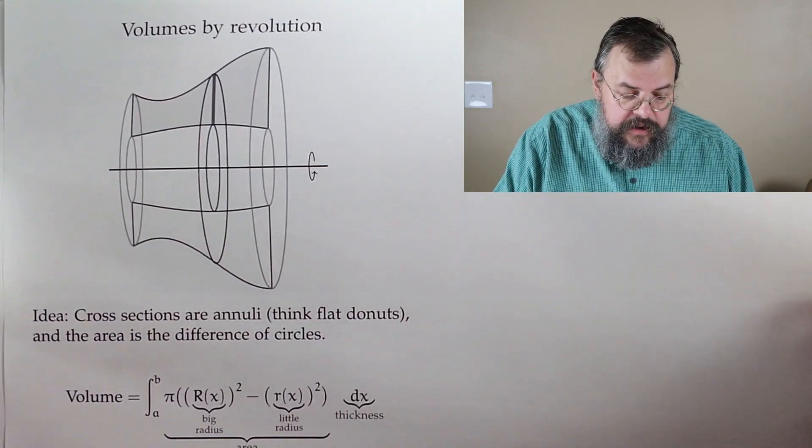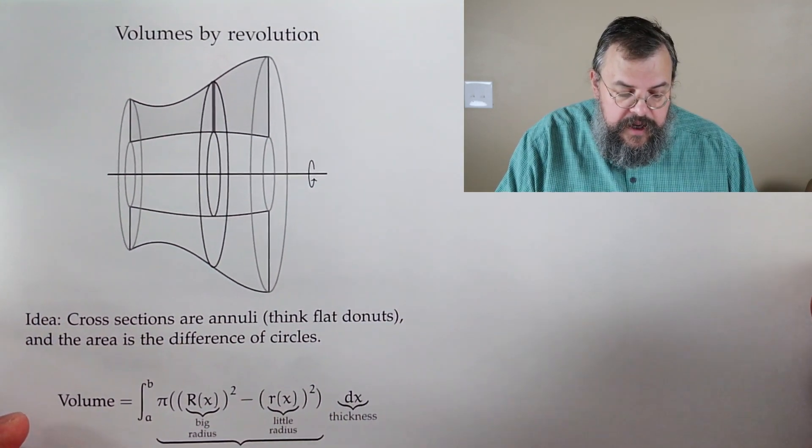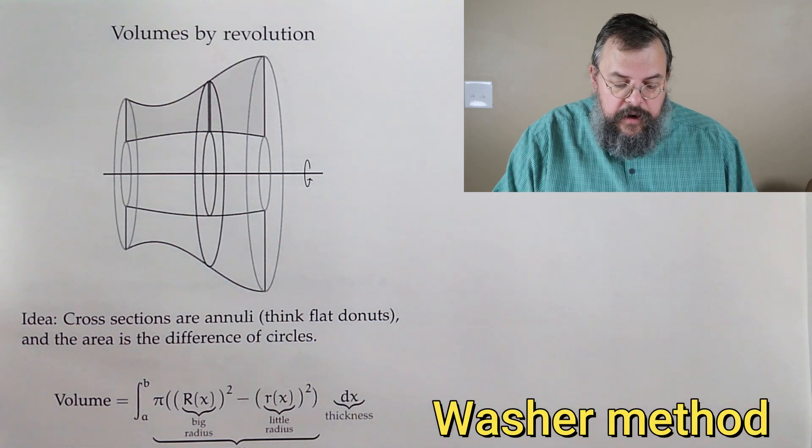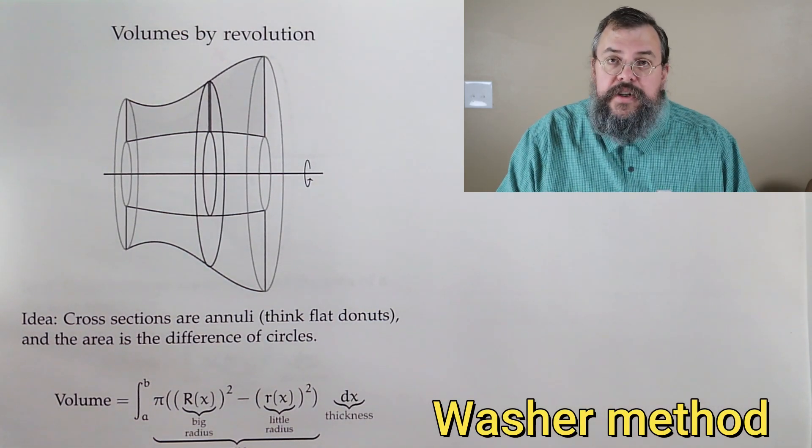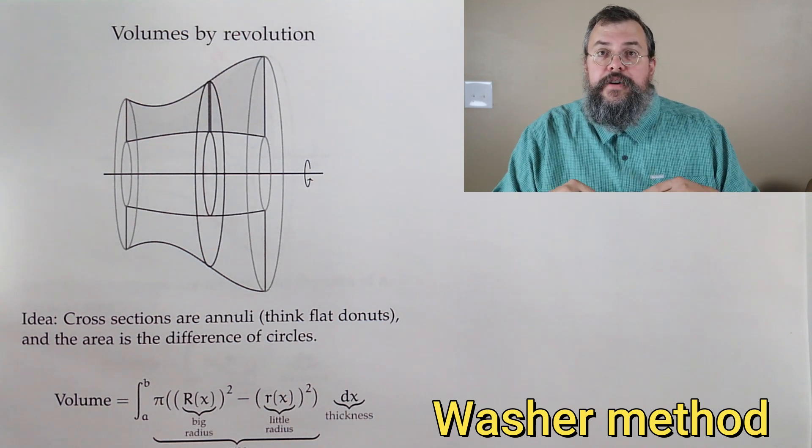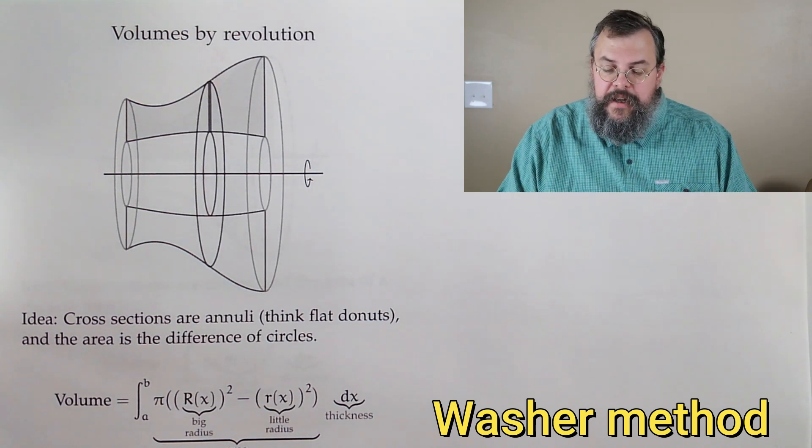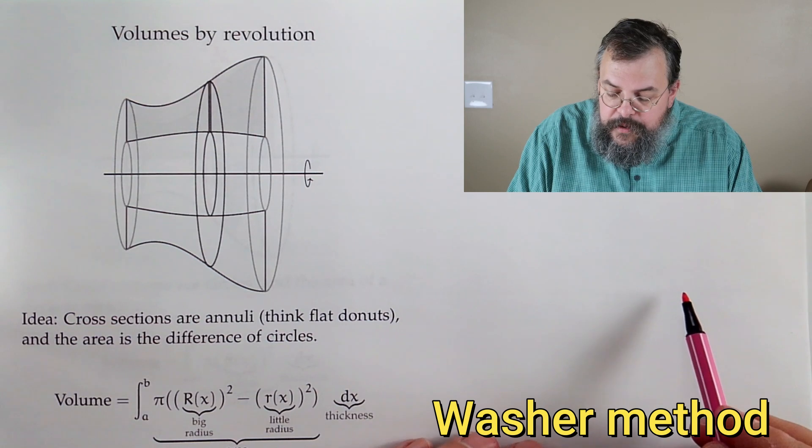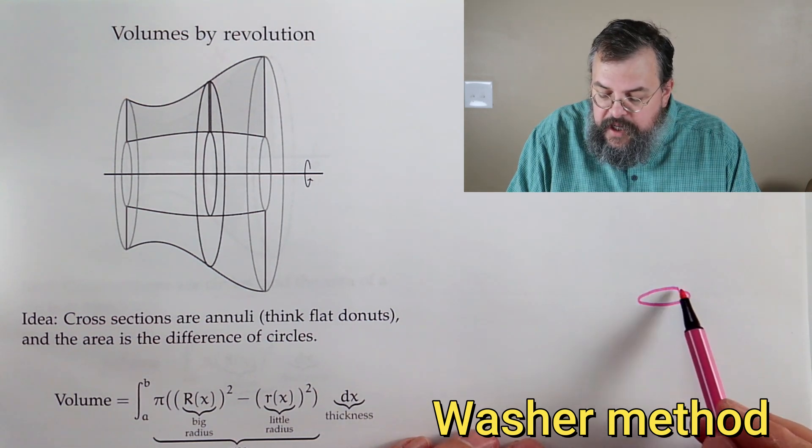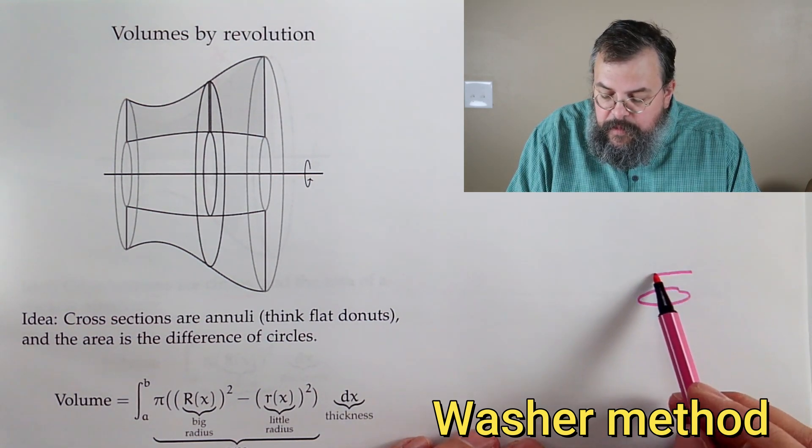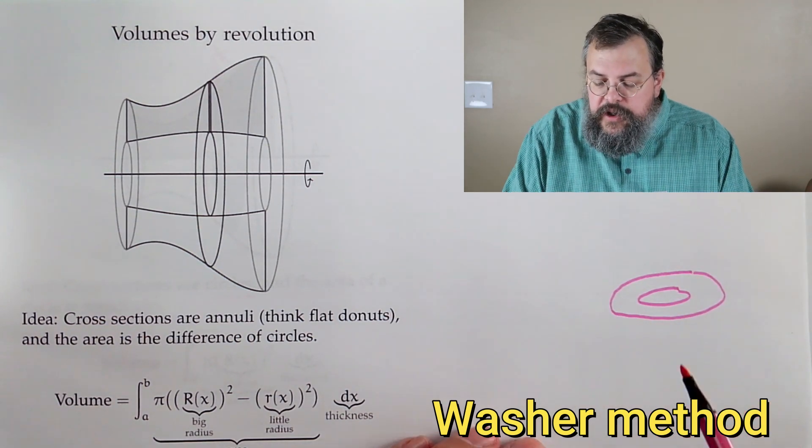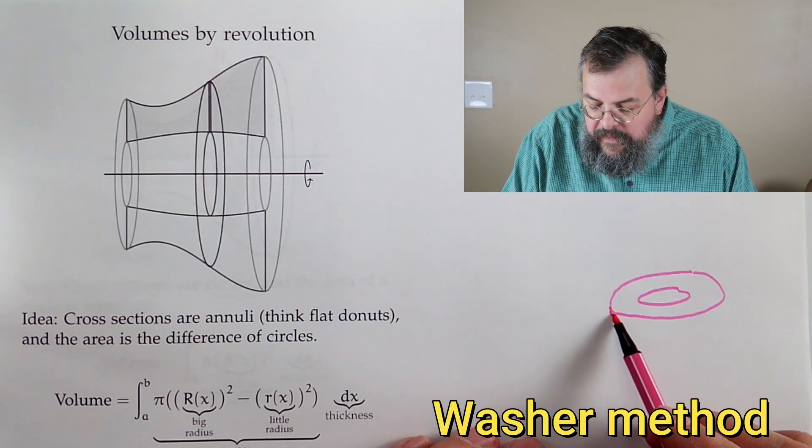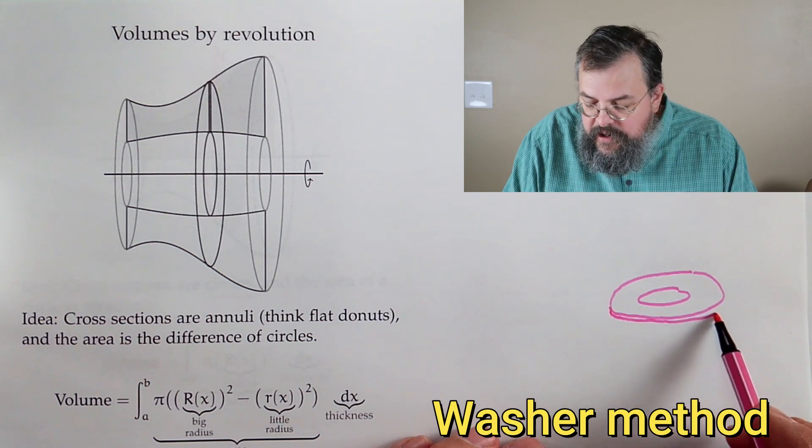Similar process here. We sometimes will call this the washer method. Now, if you're familiar with washers, not like a laundry machine washer, that's not what we mean. A washer, if you are building objects, it's just a very small, flat object that looks like that. That's what a washer tends to look like. And it's very, very thin.